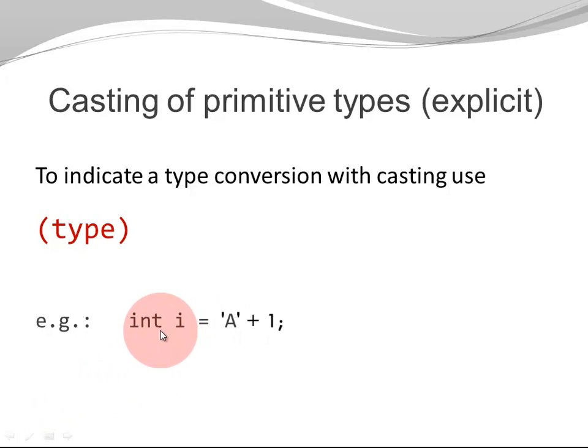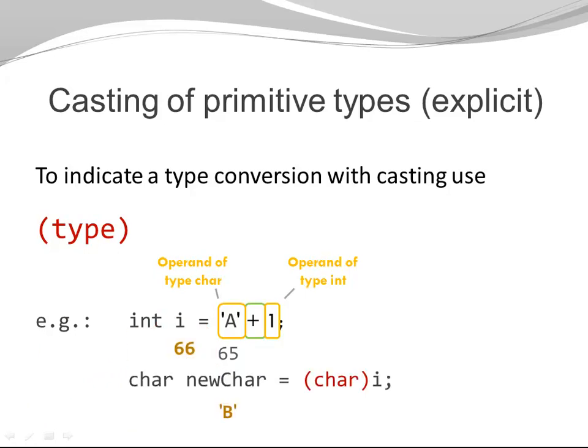Here, I have an integer i. I'm assigning a plus 1. Once again, we have promotion. I have a binary operator with a character and an integer. Character can be promoted to an integer. So my a is 65. 65 plus 1 is 66. And i receives the value 66. Let's say I want to have a new character. And I want to assign the character based on the whole number 66 to my new character. This is possible, but I need a cast. Because I need to move in the opposite direction of my arrow from an integer to a character. So I'm casting my 66 to a character and it results in my character b.